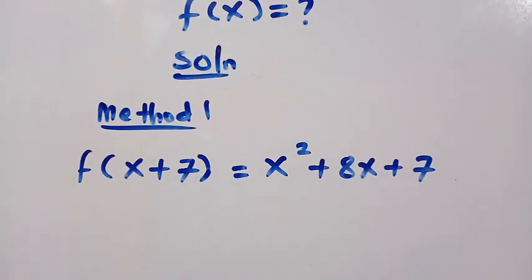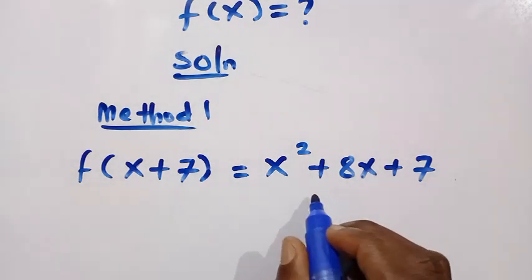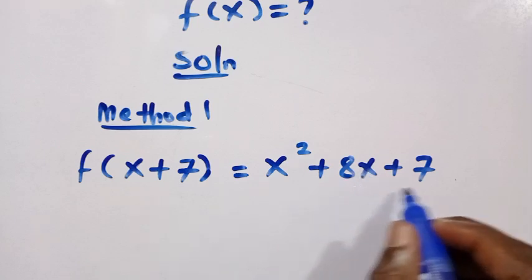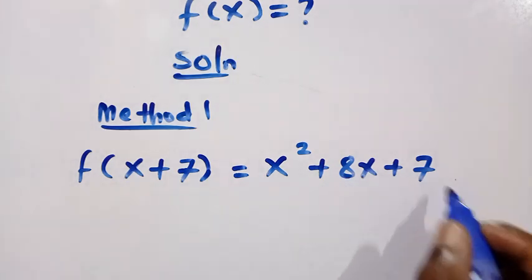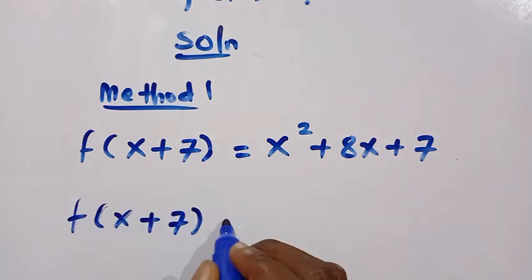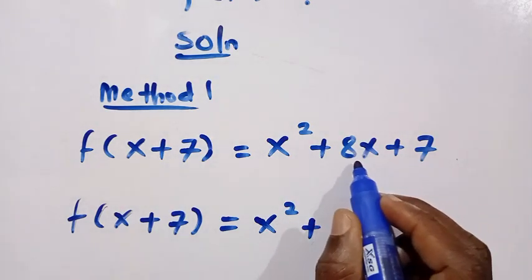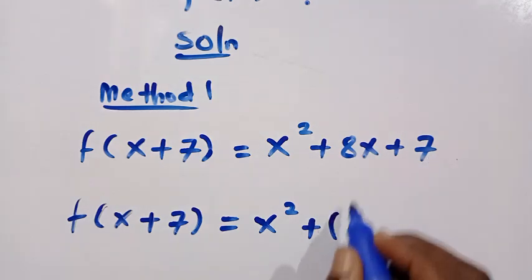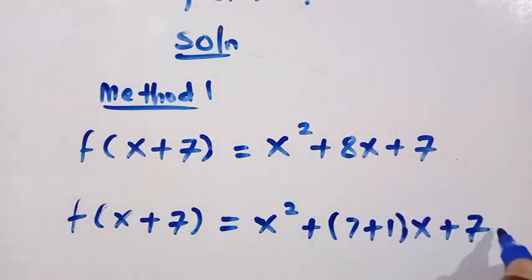Then we solve this by using form manipulations. Here at the right hand side, we have a quadratic and the middle term is the sum and 7 here is the product. We look for two numbers that the sum will be 8 and the product will be 7. Therefore, we conclude on having f(x+7) = x² plus—the two numbers is we have 7 and 1. 7 + 1 = 8 and 7 × 1 = 7.